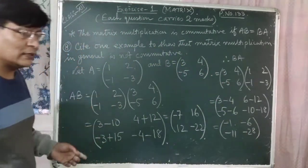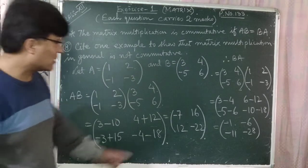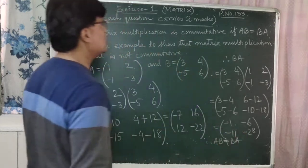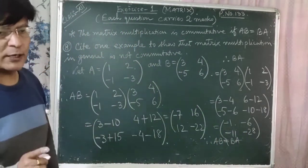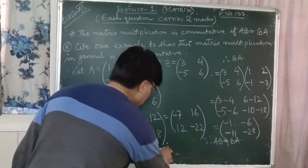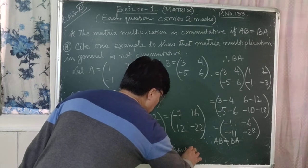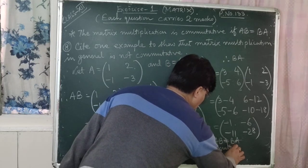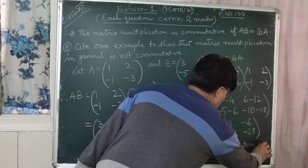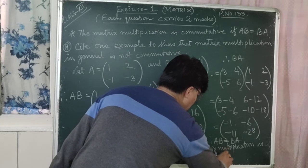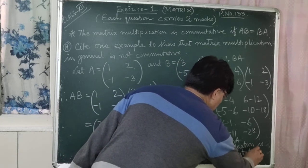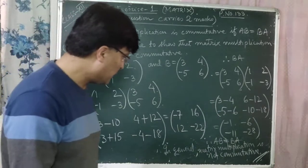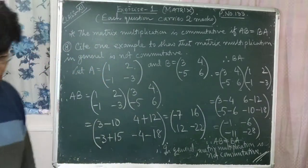Are these two matrices equal? Is AB equal to BA? No, AB = [-7,16; 12,-22] and BA = [-1,-6; -11,-28] are different matrices. Therefore AB is not equal to BA. Hence in general, matrix multiplication is not commutative.